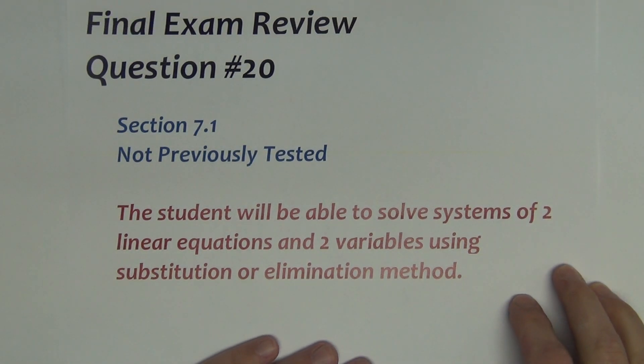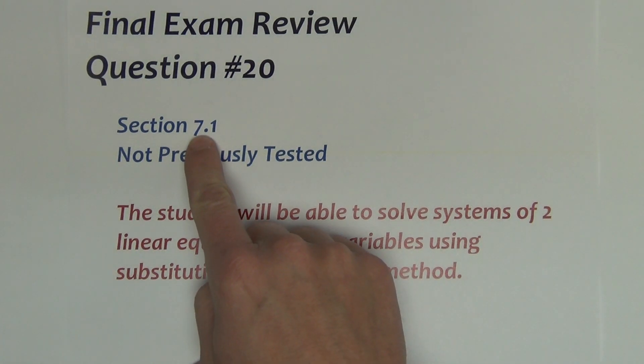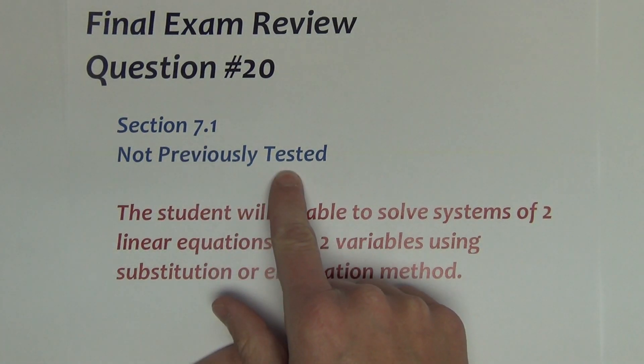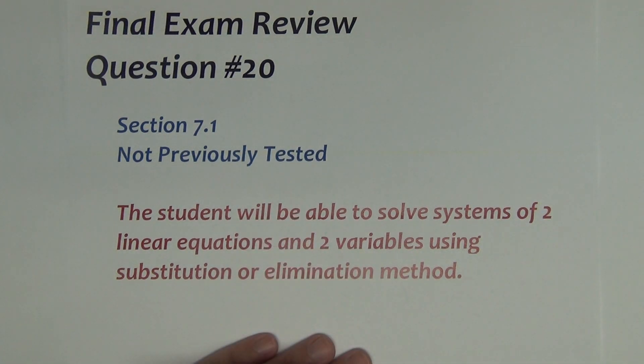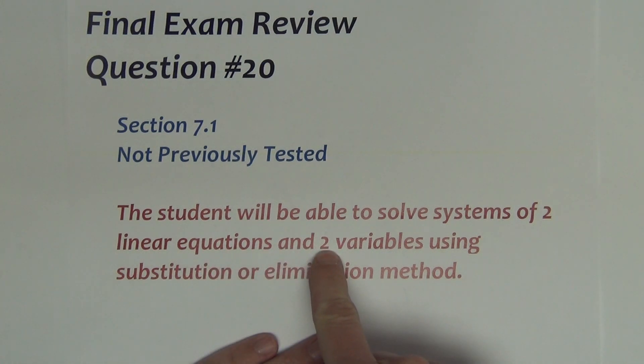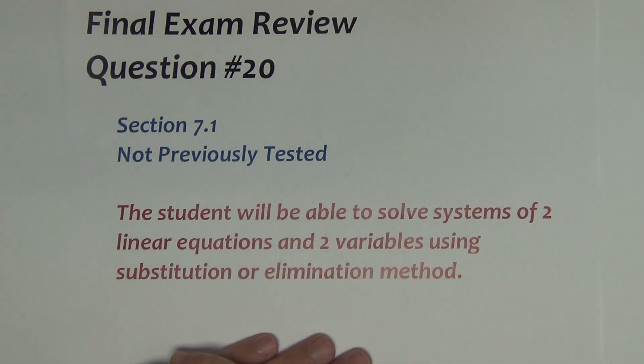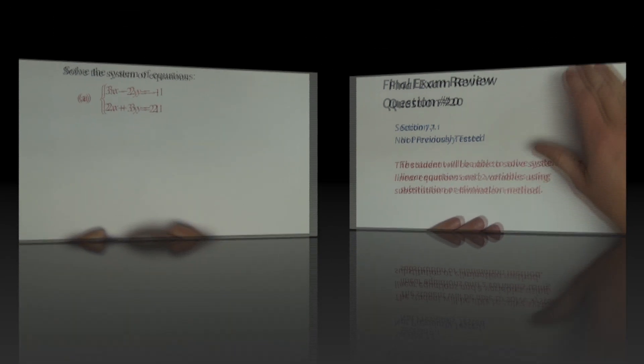Question 20 on the final exam, the halfway point, comes from section 7.1. And as such, it has not been tested to this point. In this question, I'm going to test if you can solve systems of two linear equations and two variables. You may choose to use either substitution or elimination method, depending on the type of problem and maybe your preference of one method over the other. It will be your choice which one to choose to use.